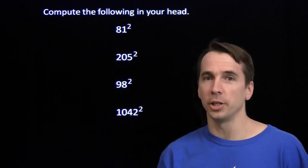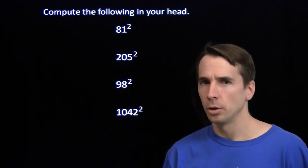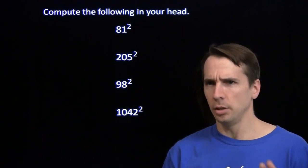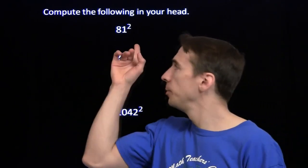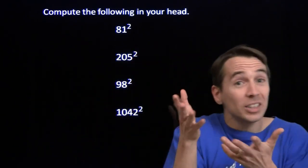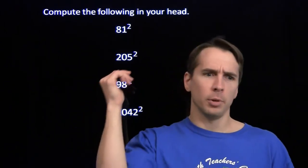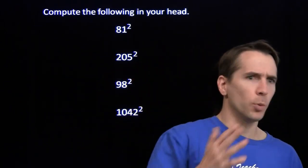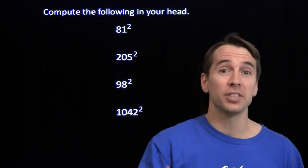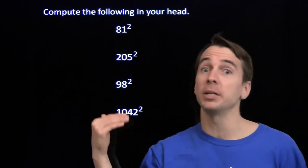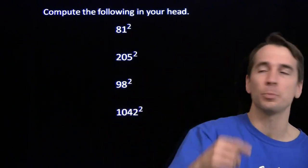We're going to be squaring some binomials here. Check this out. 81 squared — that's the square of 80 plus 1. So you've got 80 squared, 6400, plus 2 times 80 times 1, that's another 160. Brings us up to 6560, plus that extra 1 squared brings us to 6561.